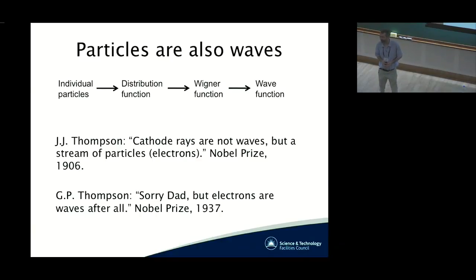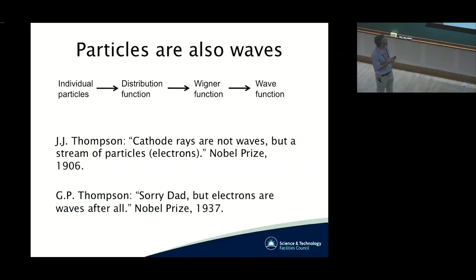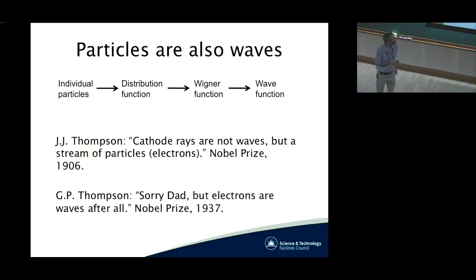There is a certain connection between particles and waves. In the early days of quantum mechanics, people discovered that particles can also be regarded as waves. You start with a collection of individual particles. If you have very many particles, you move to a distribution function. From the distribution function, in a quantum mechanics sense, you can evolve to the Wigner function, and then make the final step to the wave function describing your particles.